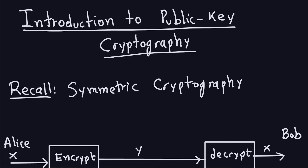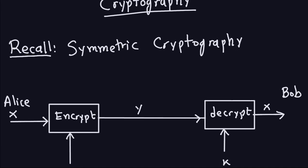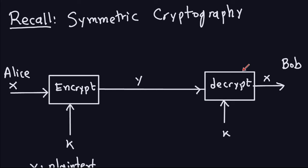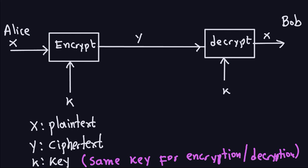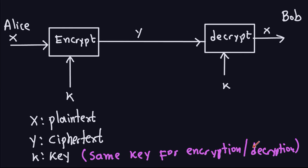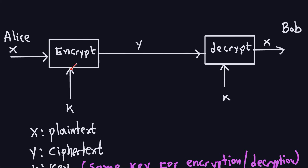So what is symmetric cryptography? The name symmetric comes from the fact that when you want to encrypt or decrypt a message you're going to use exactly the same key. Remember the setup we had: Alice is the person who wants to send messages and Bob is the person who receives them. X denotes the plain text, Y denotes the ciphertext, and K is the key — the same key for both encryption and decryption. Alice encrypts the message and transmits it through an insecure channel, and Bob decrypts it with exactly the same key to get the plain text.